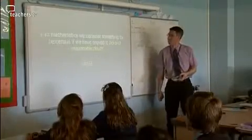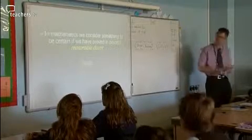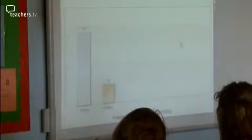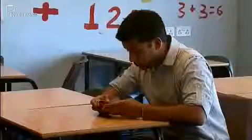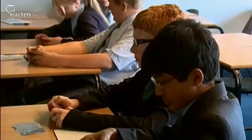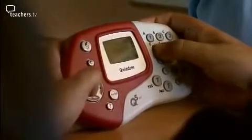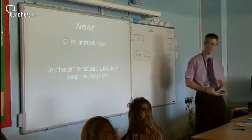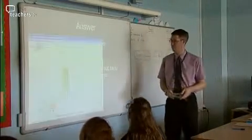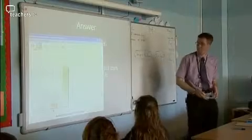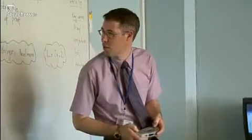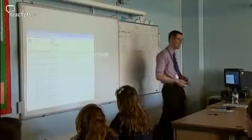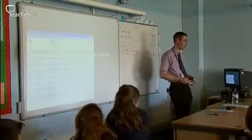The answer is false. Let's have a quick look at the results — not quite so well on that one. Let's up the pace a bit. How many prime numbers are there? You've got 20 seconds to give me an answer. The answer is an infinite number — it's a very simple statement, but it's not that easy to prove that it's true. We're getting better as we go on. Who is fastest there? Number 16? Who's number 16? Emily. Very good.